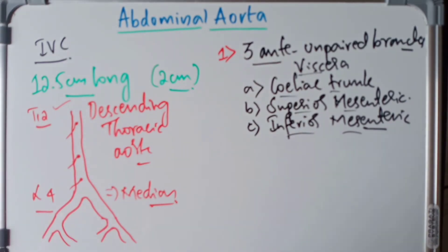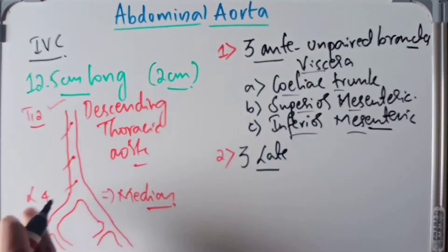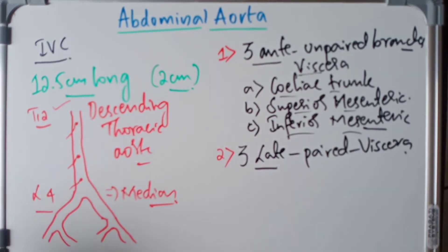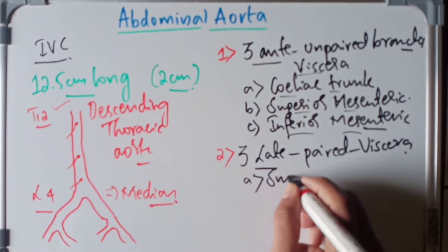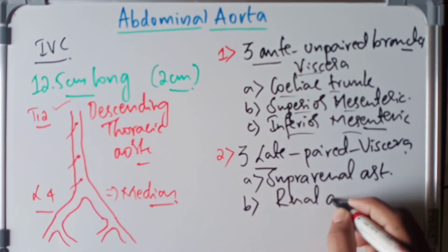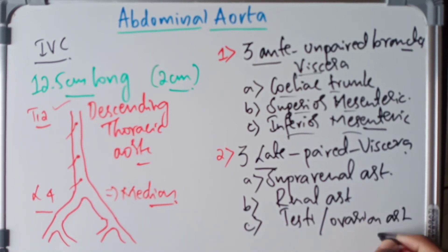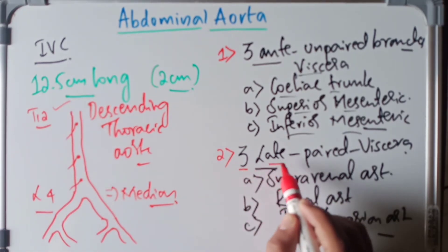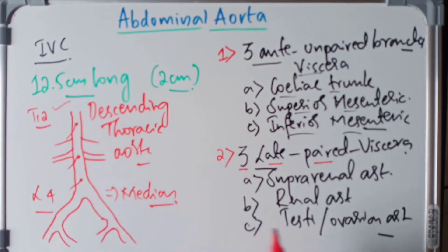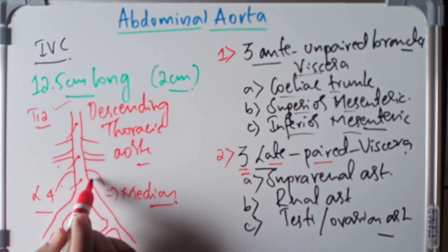The second group is the three lateral paired branches to the viscera. They lie lateral to the abdominal aorta and are paired. These are the suprarenal artery, the renal artery, and the testicular or ovarian artery — also known as the gonadal arteries.